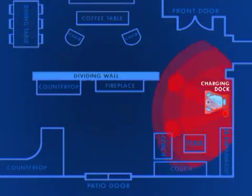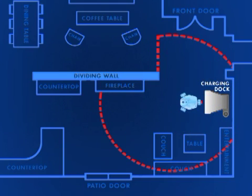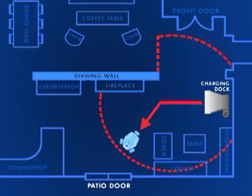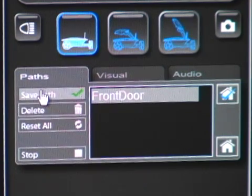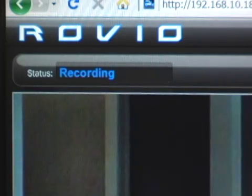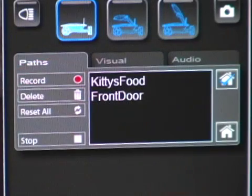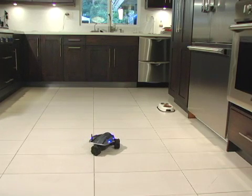In addition to homing, you can create your own custom shortcuts to other locations where you have TrueTrack coverage. By clicking the record button, you can record a path from one place to another or to a specific spot in a room. Once you have a path recorded, you simply click on the path and Rovio will attempt to replay your route.